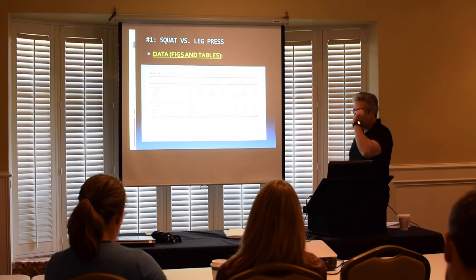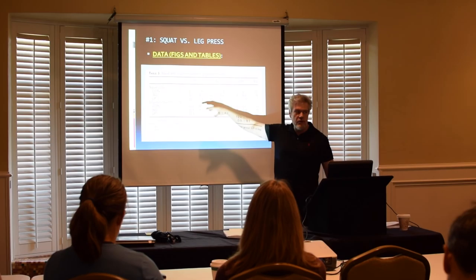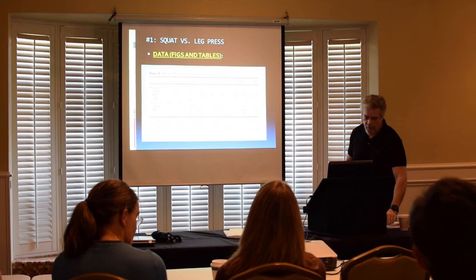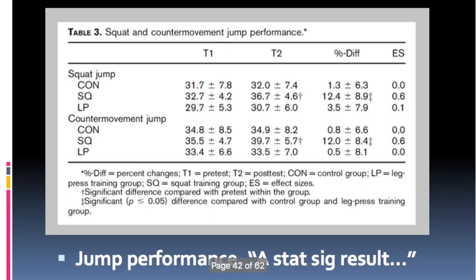Table three: squat and counter-movement jump performance. They're looking at the ability of these two exercises to affect these measures chosen for speed-strength performance — the squat jump, the counter-movement jump, and we'll get to the drop jump. We pre-tested all groups, took them through the eight-week intervention, then did a post-test. They're showing us the percent difference and again the effect size. Immediately, my eyes are drawn to the squat effect size of 0.6.